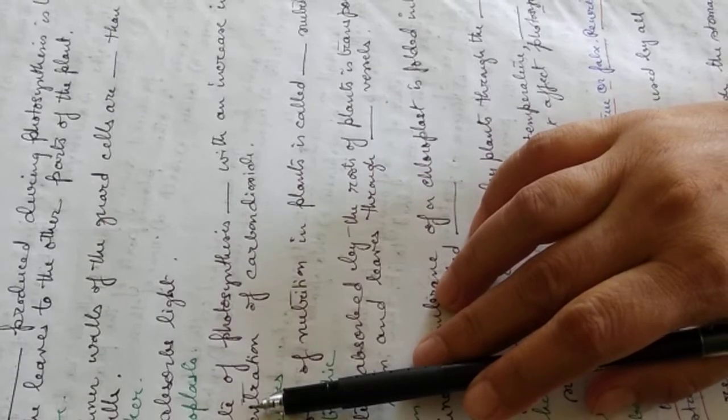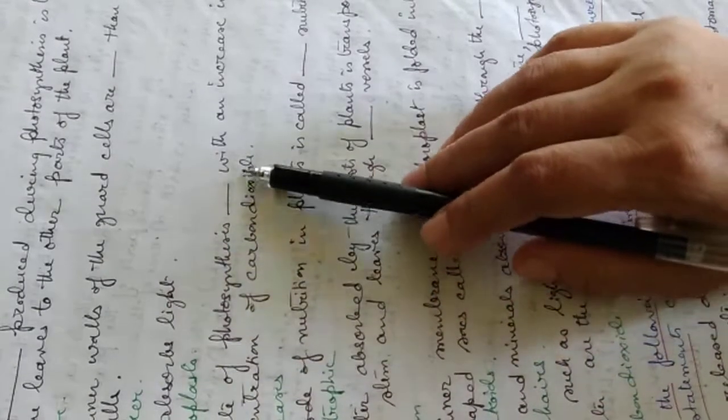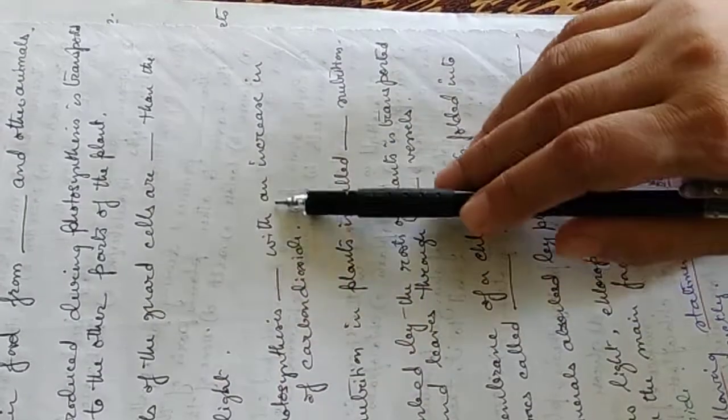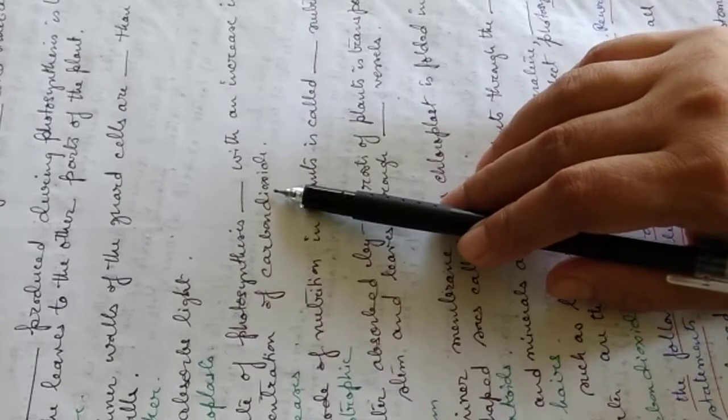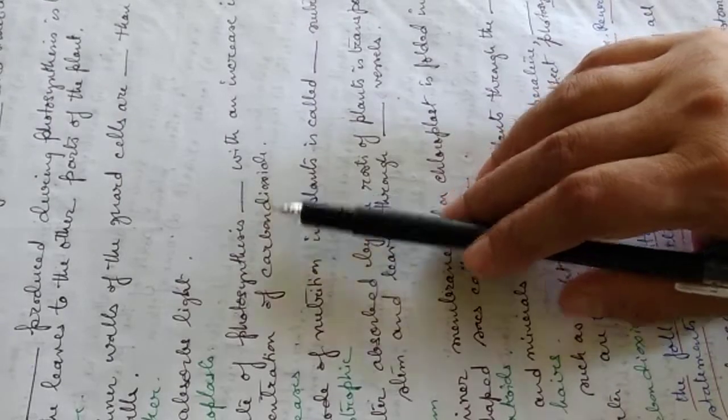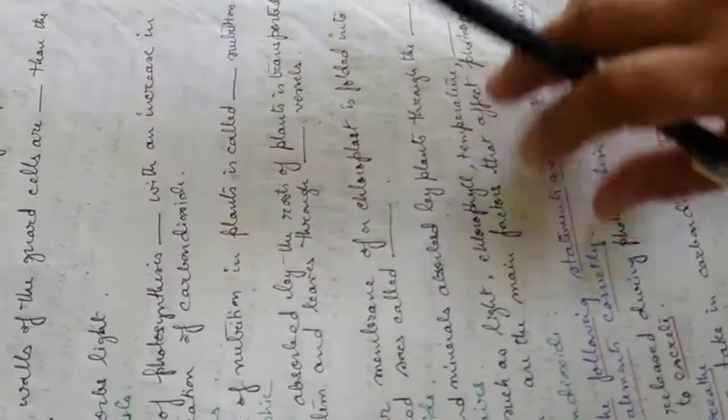The rate of photosynthesis dash with an increase in the concentration of carbon dioxide. What happens to the rate of photosynthesis? It increases with an increase in the concentration of carbon dioxide.